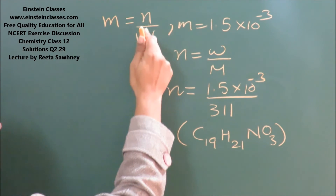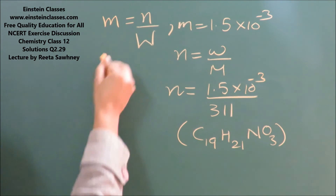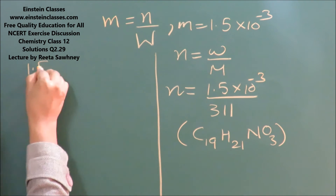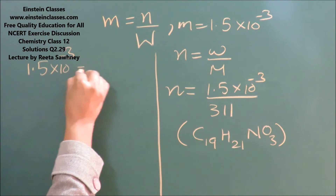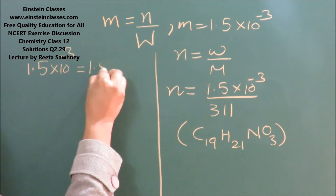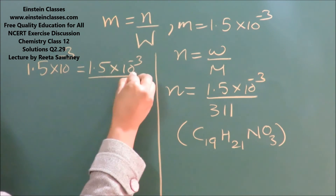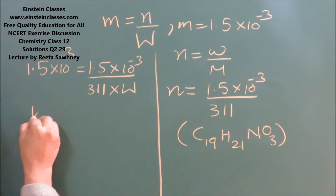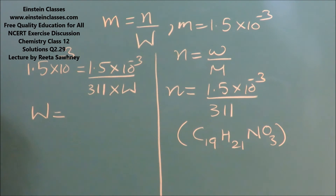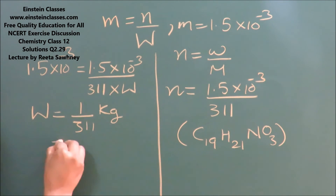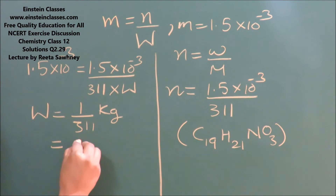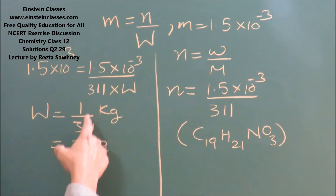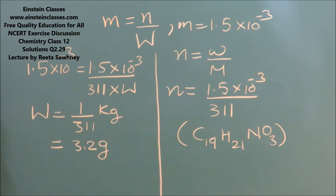By placing the values into the molality formula: 1.5×10⁻³ = (1.5×10⁻³ / 311) divided by the mass of the solvent. Solving, the mass of solvent comes out to be 1/311 kg. Converting kilograms to grams by multiplying by 1000, that gives 1000/311, so the mass of solvent is 3.2 grams.